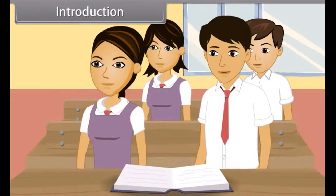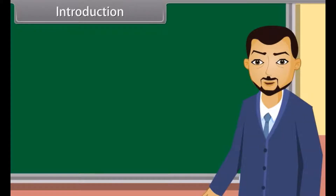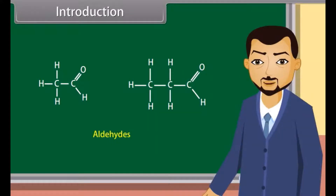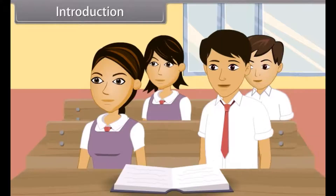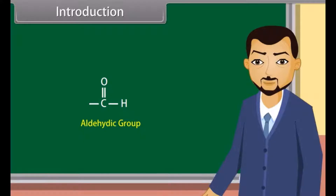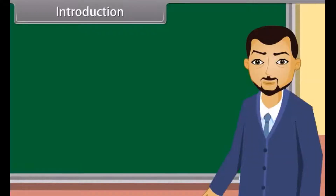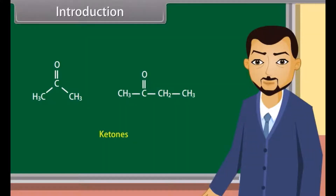Good morning teacher. Good morning students. Today we will learn about aldehydes, ketones, and carboxylic acids. Teacher, what are aldehydes? Aldehydes are the organic compounds containing the aldehydic group at the end of a hydrocarbon chain. What is the aldehydic group, teacher? The aldehydic group is a functional group defined as CHO. Now can anybody tell me what are ketones? Ketones are the organic compounds in which a carbonyl group is bonded to two carbon atoms. Very good, Ritu. In this lesson, we will learn more about aldehydes, ketones, and carboxylic acids.